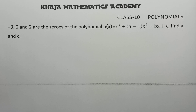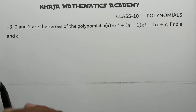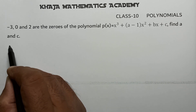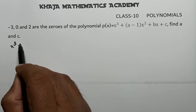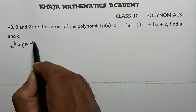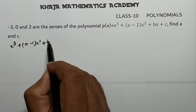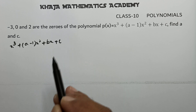Polynomials Class 10th important problem: -3, 0, and 2 are the zeros of the polynomial p(x) = x³ + (a-1)x² + bx + c. We need to find the values of a, b, and c.